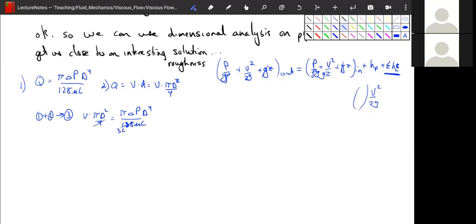This becomes 32. Pies cancel out. Two of the d's cancel out. Great.